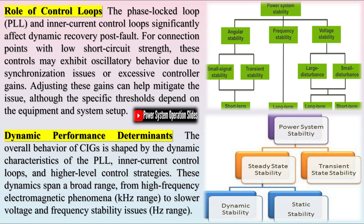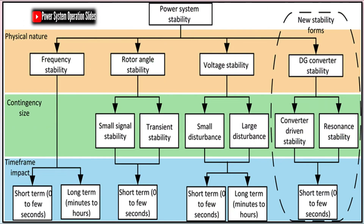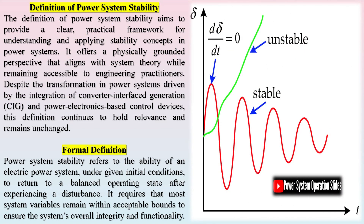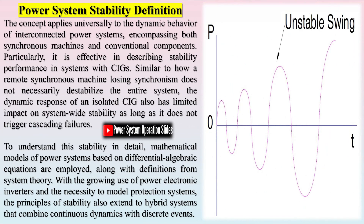The classification is based on the intrinsic dynamics and components involved in stability challenges. Timescales help identify the relevant components, phenomena, and controls that must be modeled to accurately capture specific stability issues. In this context, the discussion excludes certain aspects, such as local instabilities due to incorrect control settings, control loop instabilities that can be analyzed without modeling the entire power system, stability issues specific to microgrids, and electromechanical or electromagnetic wave propagation phenomena.